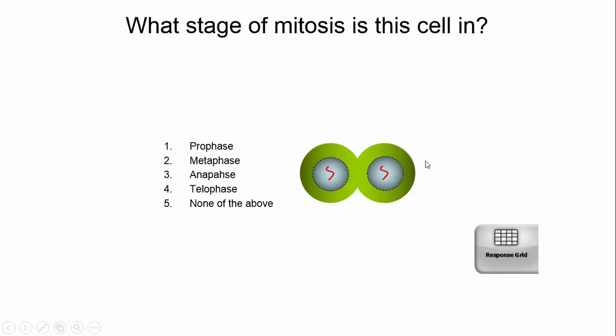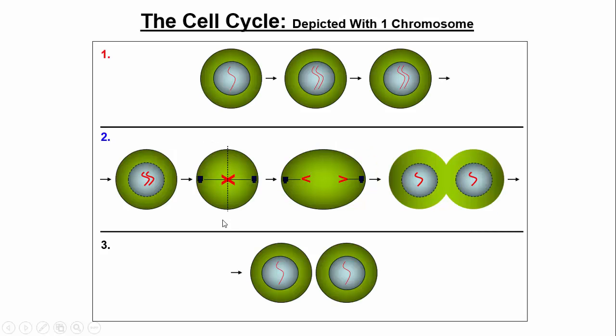Quick question: what stage of mitosis is this cell in? You can see this must be an animal cell — the cleavage furrow has formed and the membrane is starting to reform. So this would be telophase. I encourage you to print out this slide, label every structure, identify every substage, and determine how many chromosomes and how many strands of DNA are in each cell.